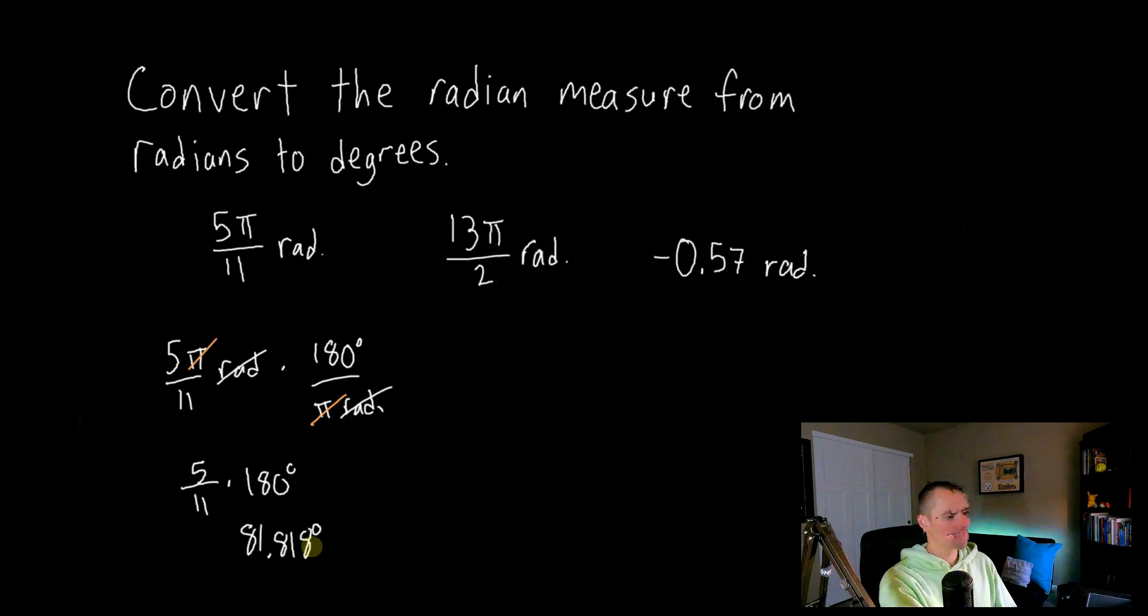And make sure to put your unit of degrees on there. If you wanted to leave it in exact form instead of multiplying and rounding to three decimal places, you could always think about how to simplify this fraction instead. I don't think it even would simplify, but you could at least kind of put it into a single fraction.